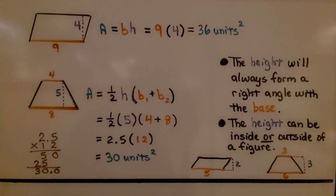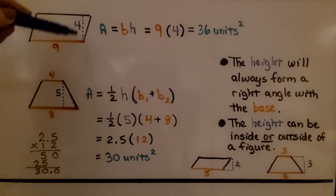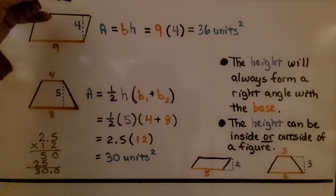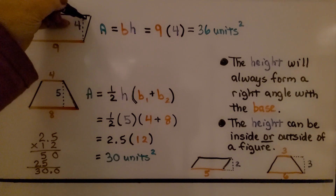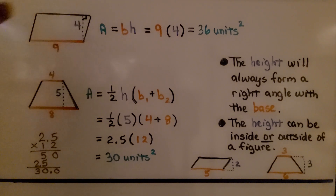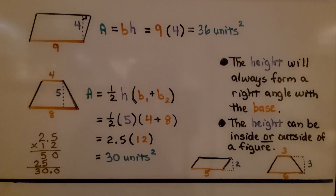For our parallelogram, we have a base of 9 and a height of 4. We can see it's perpendicular to the top, making a right angle. Area equals 9 times 4, which is 36 units squared.